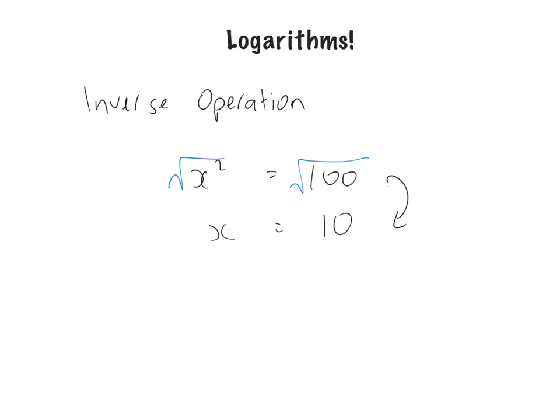But what happens if we have a problem like this? 10 to the power of x is equal to 1,000. Now, we do have an answer for that because by inspection we can see that 10 cubed is equal to 1,000. 10 times 10 is 100 times 10 is 1,000. But we don't have an inverse operation defined as of yet, which will allow us to simply apply that inverse operation to both sides to work at what x is. So by inspection we can write x equals 3.